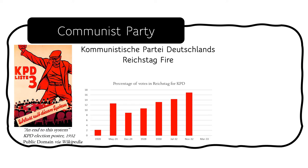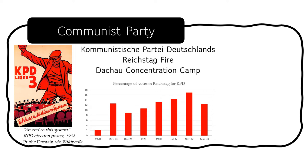The Nazi Party would ruthlessly target and attack the leading members of the KPD, convinced they lay behind the fire, or at the very least willing to use the fire as a convenient excuse to eliminate political enemies. Göring, as Minister for the Interior of Prussia, held control over the police of the state, and it was here in Prussia that the attacks on the Communist Party were most violent. Somewhere in the order of 10,000 members of the Communist Party would be arrested and sent to the newly opened Dachau concentration camp.